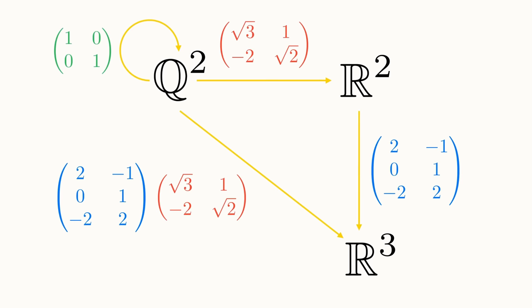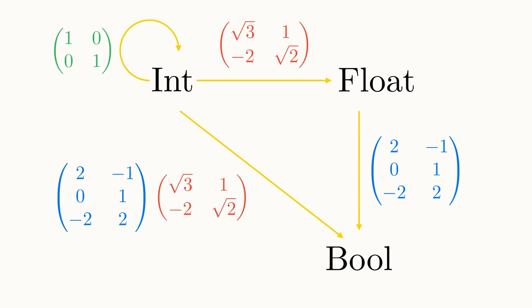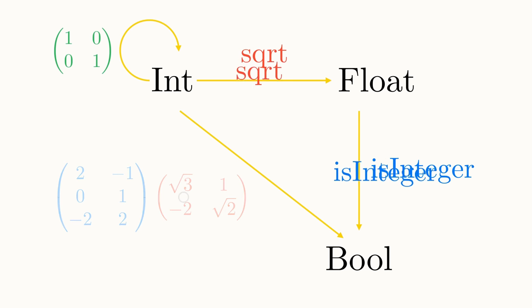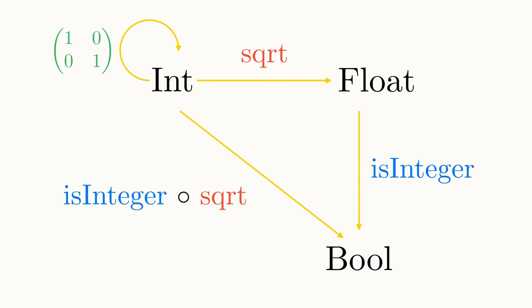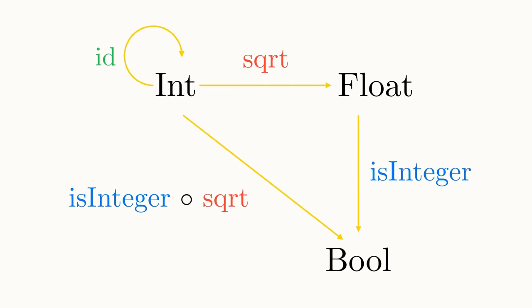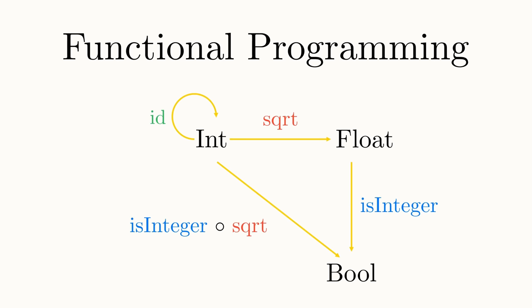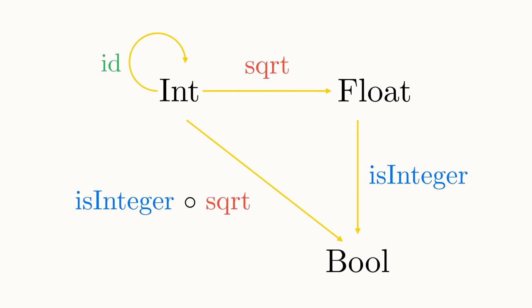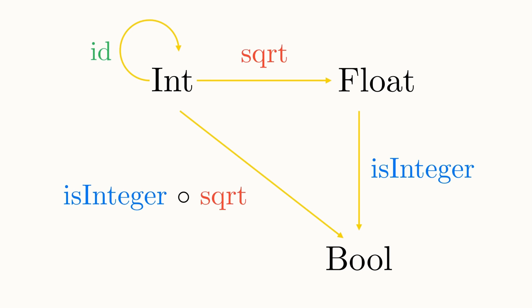Or consider if our objects were data types and our arrows were functions between them, with composition and identity arrows defined the same as in set theory, we create a category that models a basic functional programming language. If you have experience with programming, why not try to figure out what the composite function isInteger follows squareRoot returns for a given input? Can you think of a suitable name for this function?